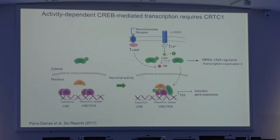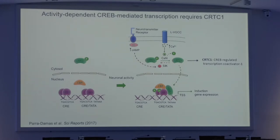This transcriptional co-activator is present at the cytosol or synapses, and after neurotransmitter activation or depolarization signals, CRTC1 is dephosphorylated by the phosphatase calcineurin. Dephosphorylation of CRTC1 induces its translocation to the nucleus to activate specific genes mediated by CREB. Most of the genes dependent on CRTC1 also depend on CREB, so CRTC1 drives gene expression specifically mediated by CREB.